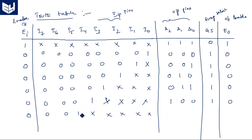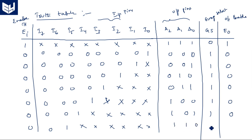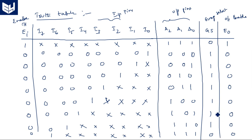When I5 is activated, output is 1-0-1. When I6 is activated, output is 1-1-0. When I7 is activated and all others are don't care, output is 1-1-1. Since all output bits are one, group select is activated and enable output is zero. Group select indicates that all output pins are in the deactivated state.